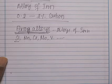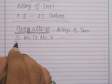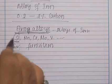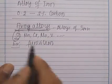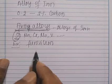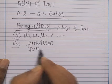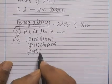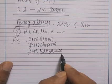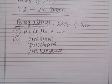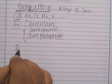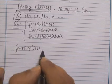For example, silicon is introduced into the steel in the form of ferro silicon. Ferro chrome is used to introduce chromium into the steel. Ferro manganese is used to introduce manganese into the steel.